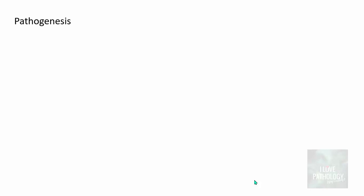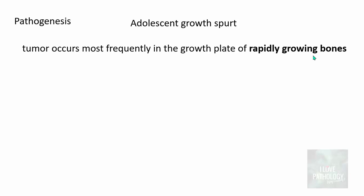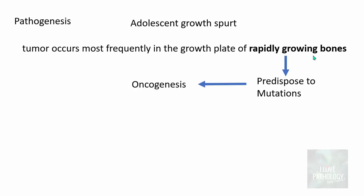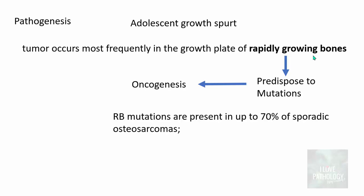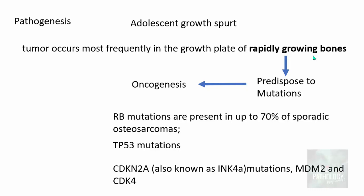Osteosarcomas occur more commonly in adolescent individuals during the adolescent growth spurt. Because of rapid proliferation at the growth plate in rapidly growing bones, these are more prone to mutations that favor oncogenesis. Key mutations include RB gene mutations present in up to 70% of sporadic Osteosarcomas, TP53 mutations, and CDKN2A mutations — formerly called INK4A, MDM2, and CDK4 mutations.